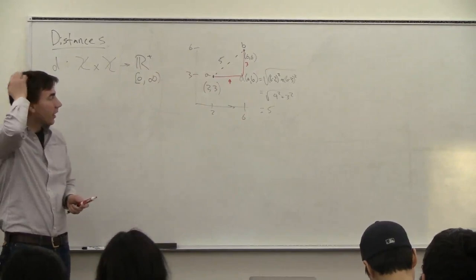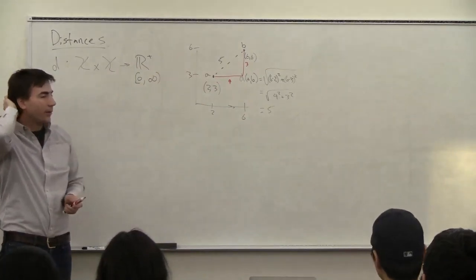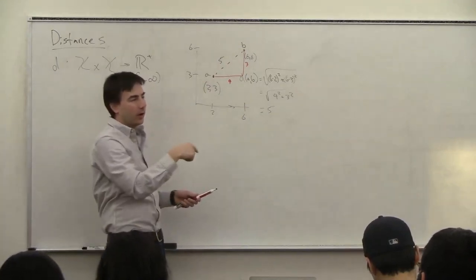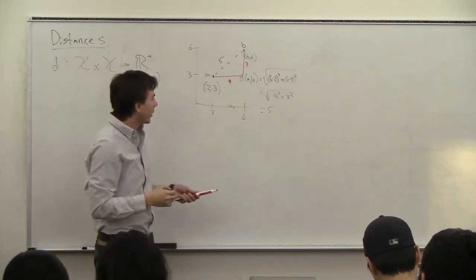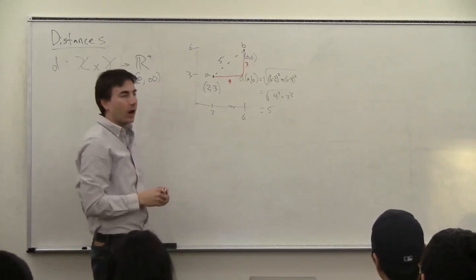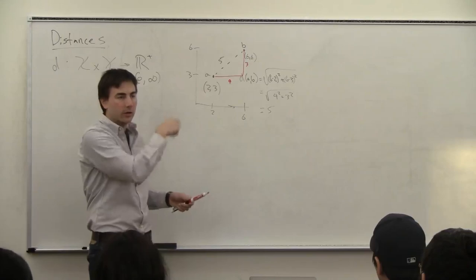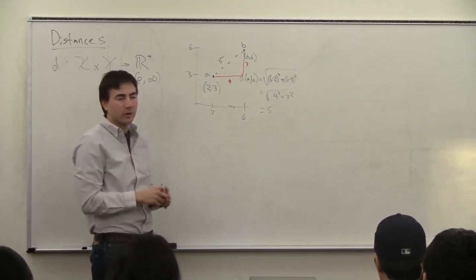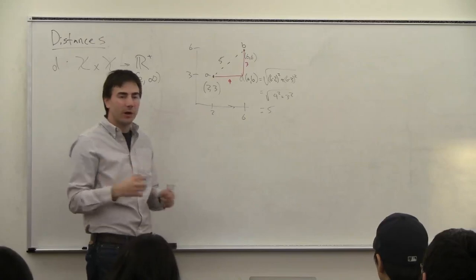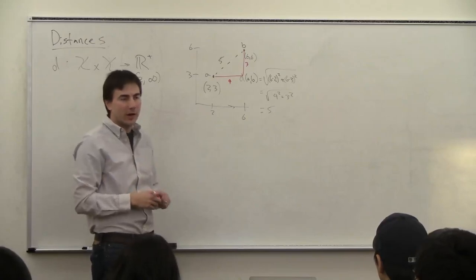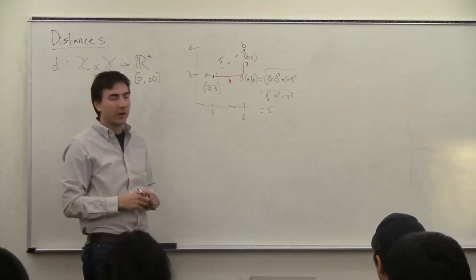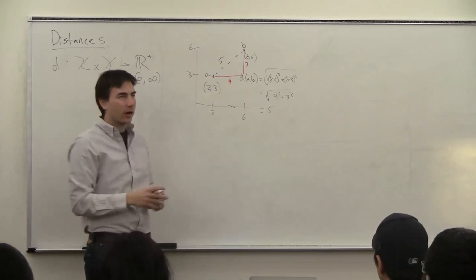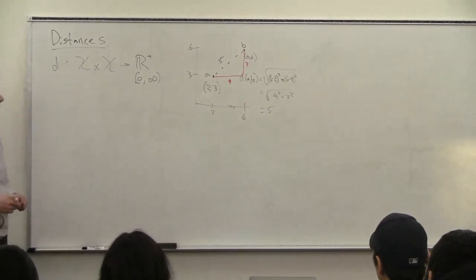These distances have different properties. The Euclidean distance has a nice property that if you rotate the space, it stays the same. In other ways, the L1 distance — the Manhattan distance — is going to be more robust, more stable in some sense. Often you want what's called the L0 distance, but the L0 distance is hard to work with because it's not convex. So there are these different ways to define distance.